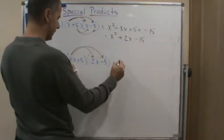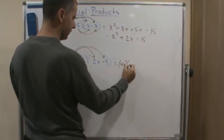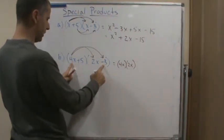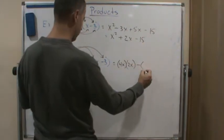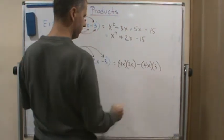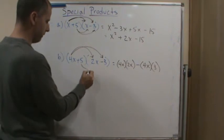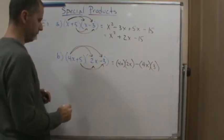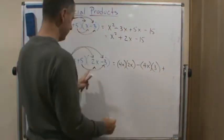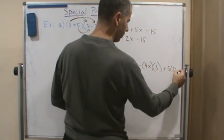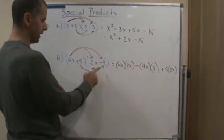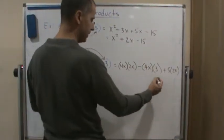We get four x times two x, and then minus — because we have a plus and a subtraction — so that's minus four x times three. Now we distribute the five across both terms, giving us plus five times two x, and then minus five times three — or plus five times negative three.